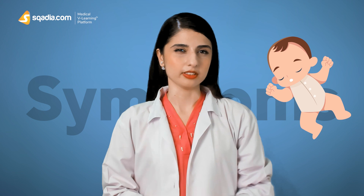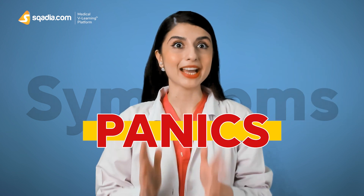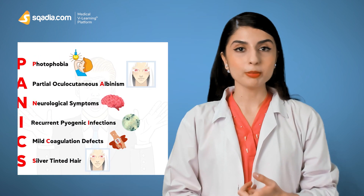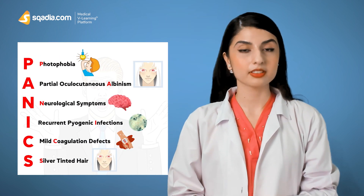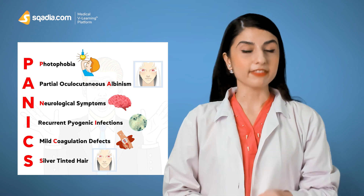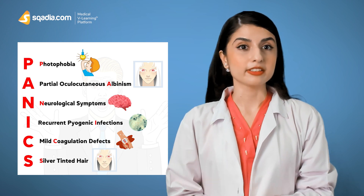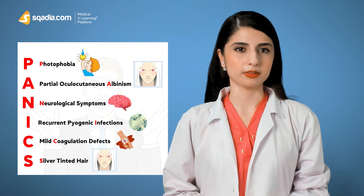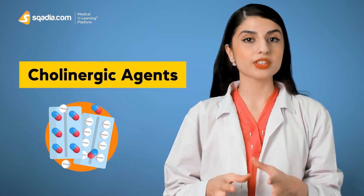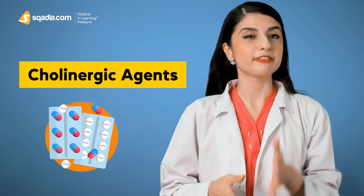Symptoms are usually observed during early infancy. You can easily memorize the symptoms by the mnemonic PANICS, which stands for: Photophobia, Albinism, Neurological symptoms, recurrent Infections, Coagulation defects, and Silver-tinted hair. Cholinergic agents are therapeutically effective because they promote microtubular repair by increasing the intracellular levels of cyclic GMP.